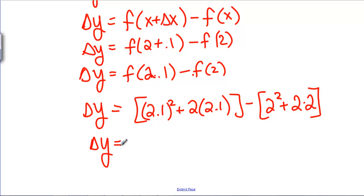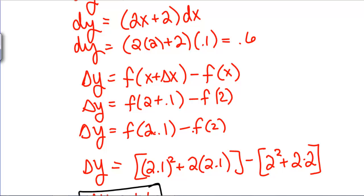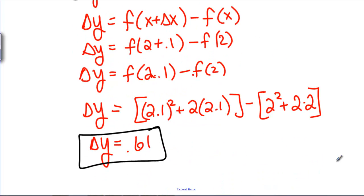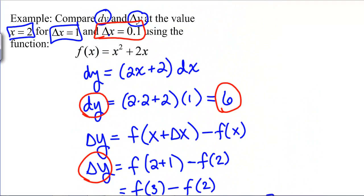What does that give us? Delta y is, maybe we want our calculator, 0.61. So now that we're closer to the point where we actually did the estimate, our delta y is 0.61 and our dy is 0.6 so you can see that when our point is that we care about, in this case 2.1 is closer to the point that we know how to find which in this case would be 2, then our dy is closer to our actual change in y. This is how you compute dy and change in y.